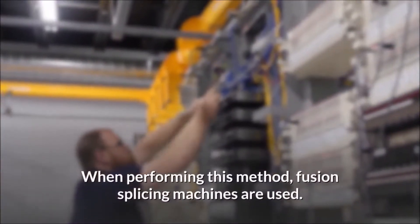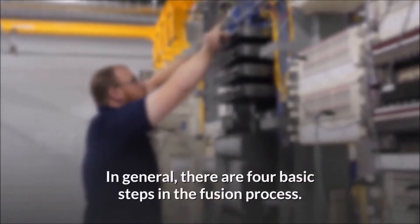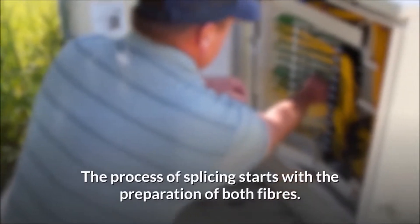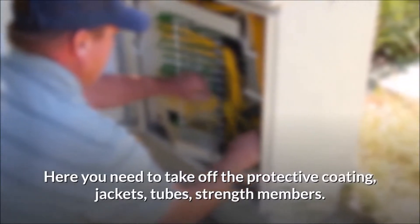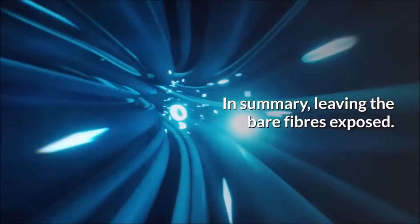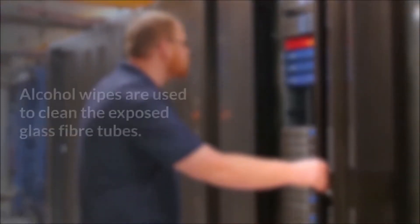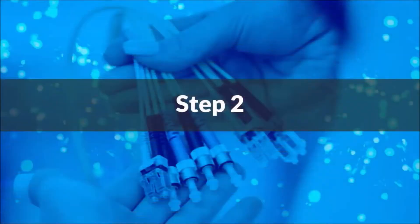When performing this method, fusion splicing machines are used. In general, there are four basic steps in the fusion process. Step 1: The process of splicing starts with the preparation of both fibers. Here you need to take off the protective coating, jackets, tubes, strength members. In summary, leaving the bare fibers exposed. It is noted that the cables must be spotless. Alcohol wipes are used to clean the exposed glass fiber tubes.